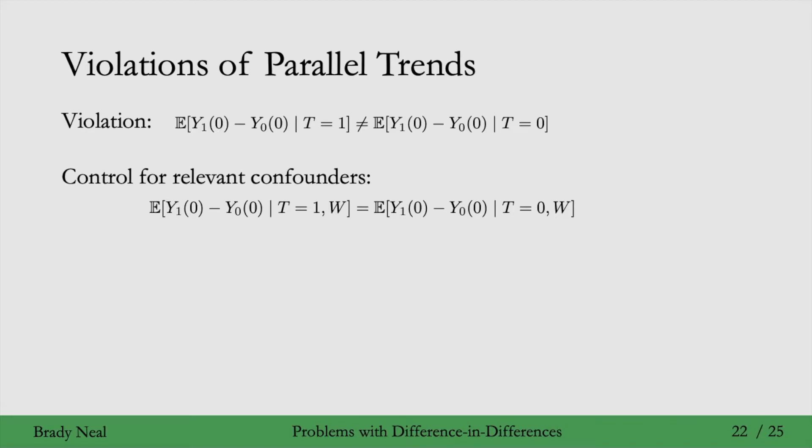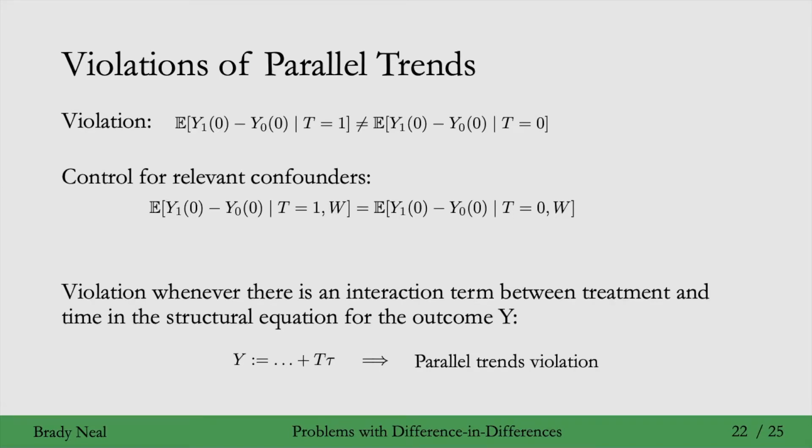But maybe something more annoying is that whenever you have an interaction term between treatment and time in the structural equation that generates the outcome Y, that means you have a parallel trends violation. So whenever that's the case, you can't have this equality, or this, you always have an inequality here between these two, or between the analog with W here.